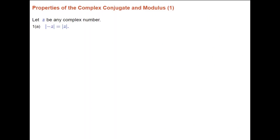In this lecture we'll explore some properties of the complex conjugate and the modulus, and we'll give their proofs. Then we'll give some examples so you can see these properties in action. The first property, property 1a, is that the modulus of minus z is equal to the modulus of z. In other words, the modulus of the negative of a complex number is simply the modulus of the original complex number.